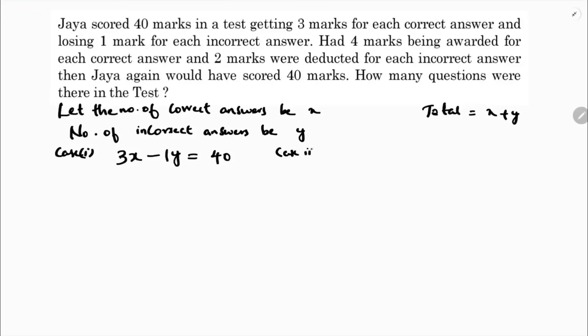In the same way, if you do the second case, 4 marks for correct answers. Correct answers are x, so 4 times x minus 2 marks for wrong answers, minus 2 for number of wrong answers. Then also the result is 40.